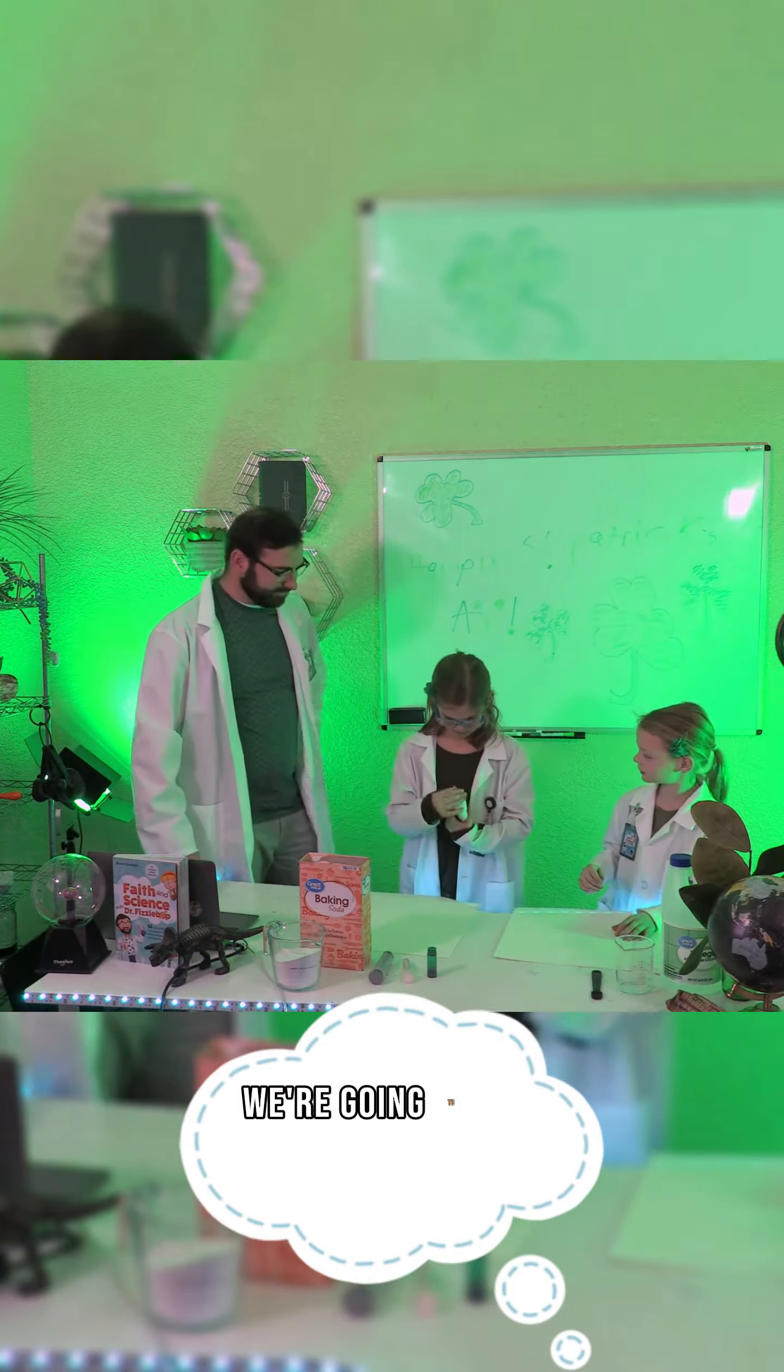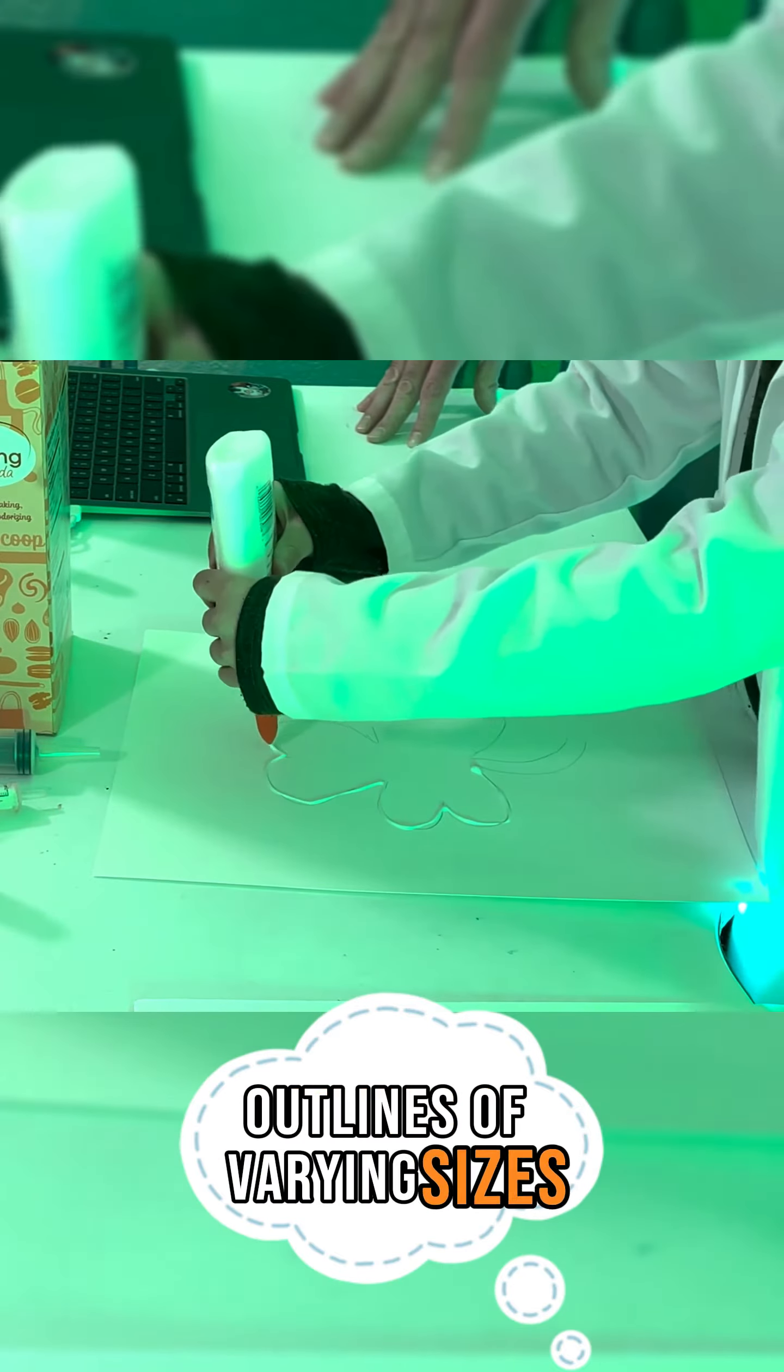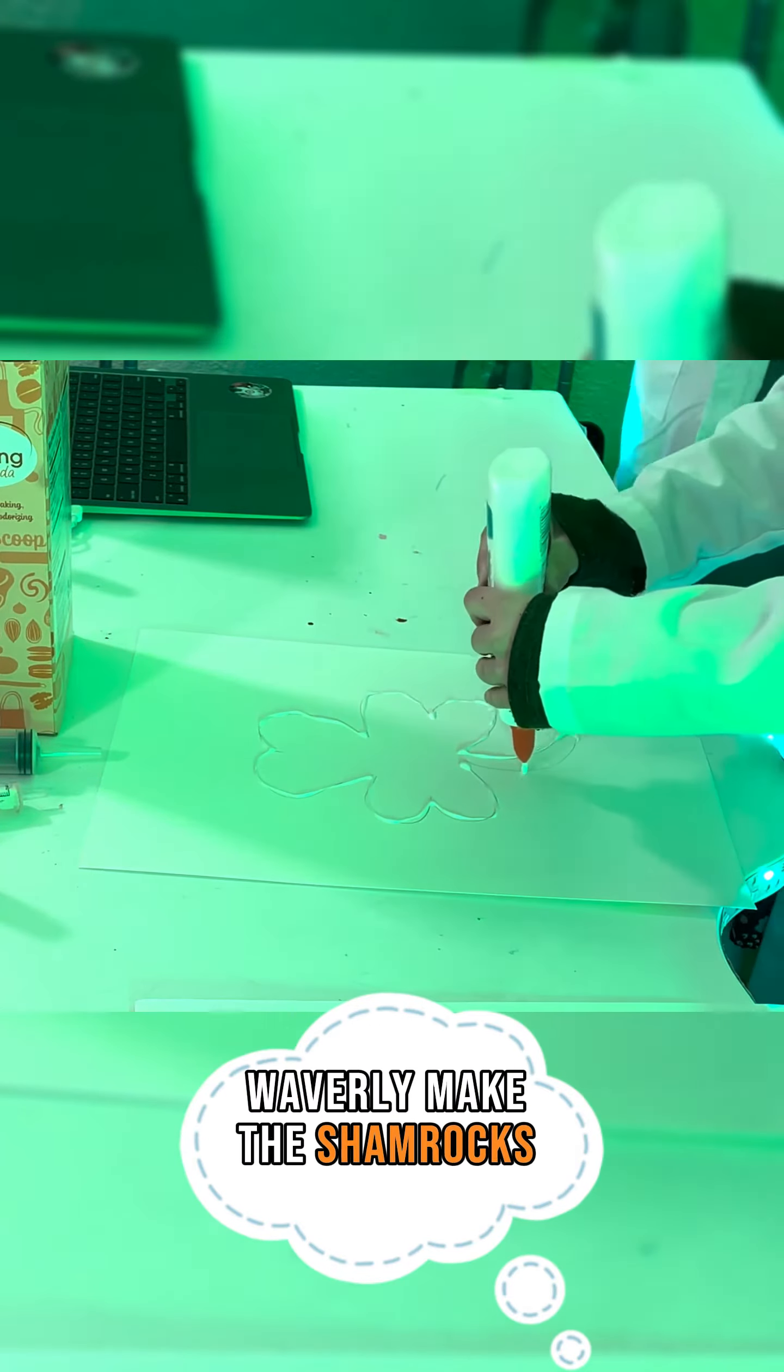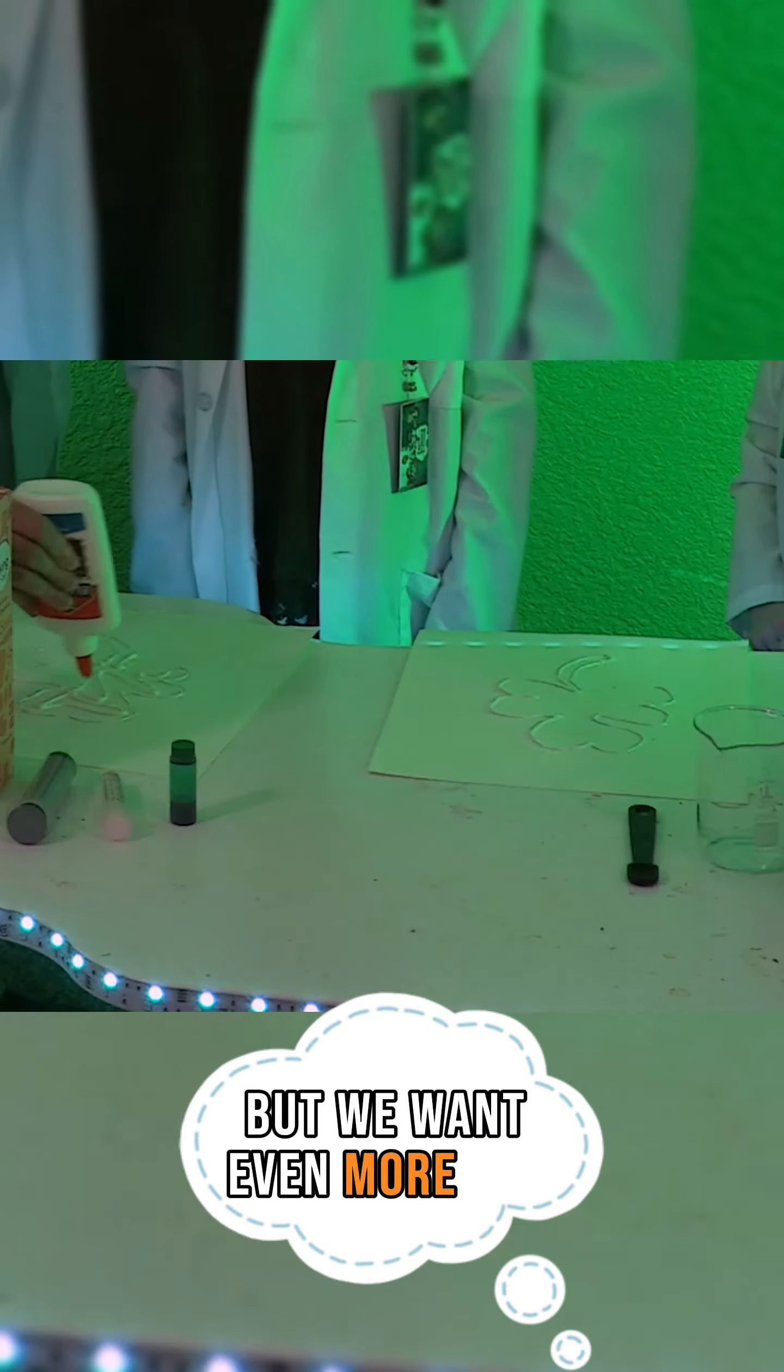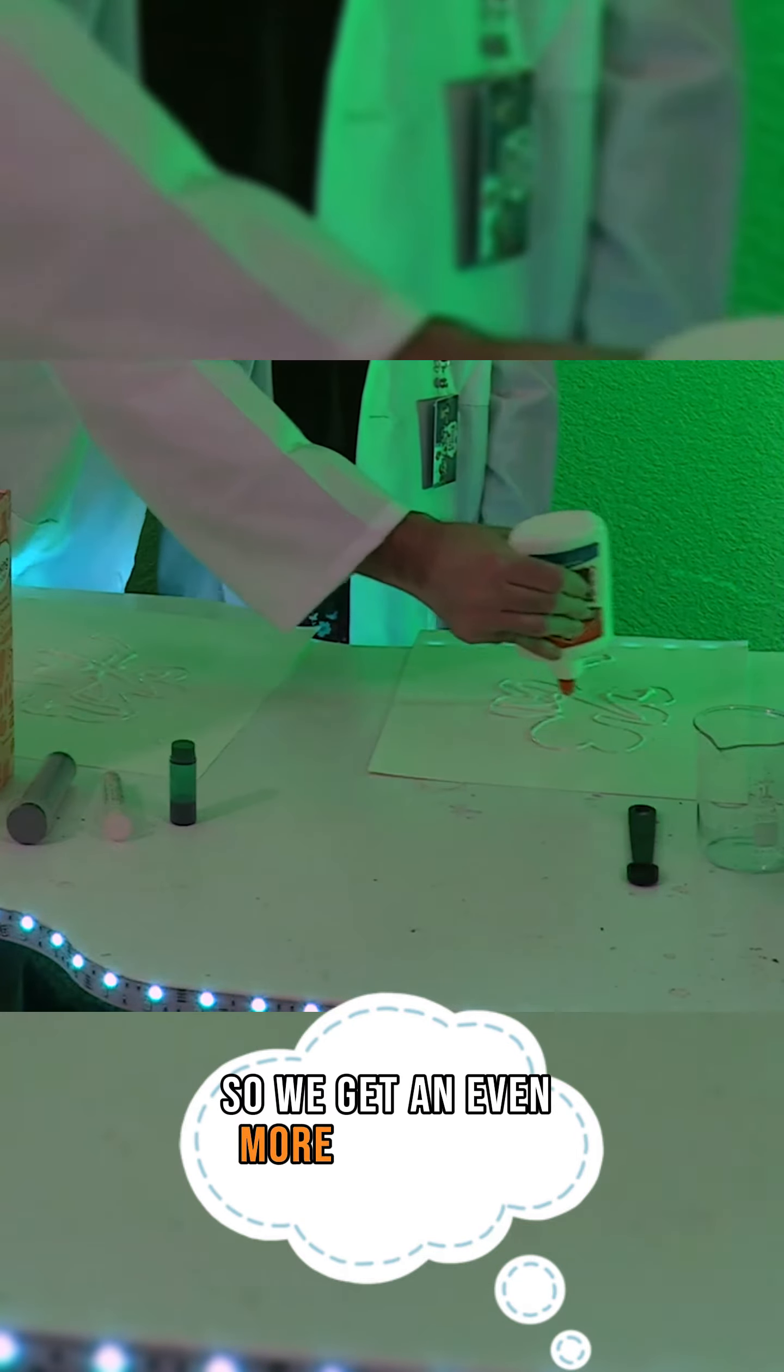On the piece of paper, we're going to use glue to make several shamrock-shaped outlines of varying sizes. But first, here's a fizz tip. Waverly, make the shamrocks at least two inches apart. Fizz-tastic! But we want even more fizz so I'm going to add some extra lines in the middle so we get an even more fizz-tastic reaction.